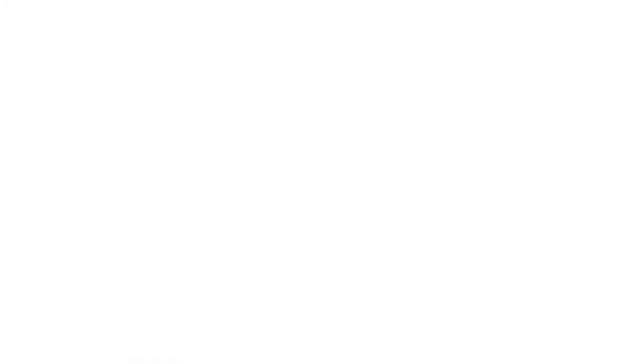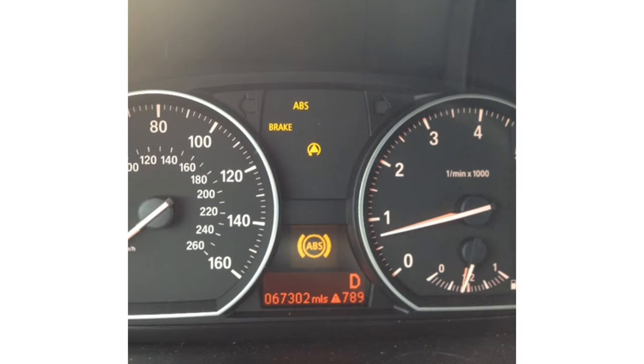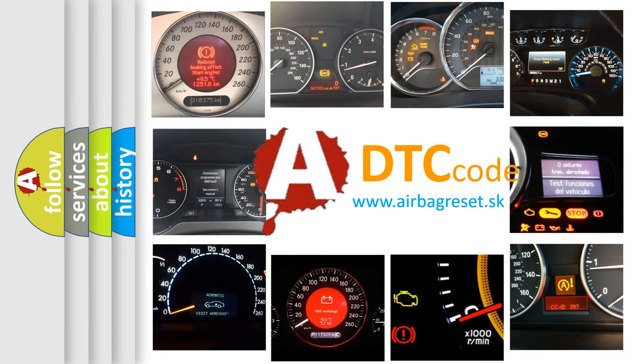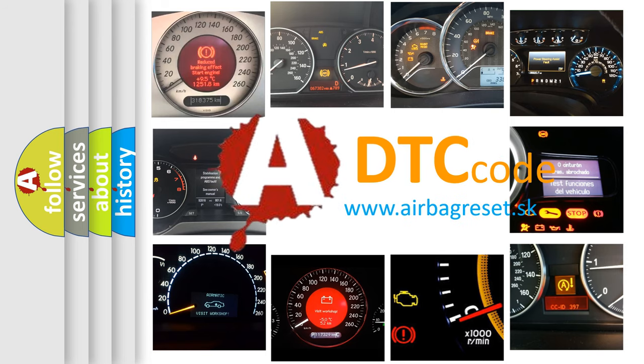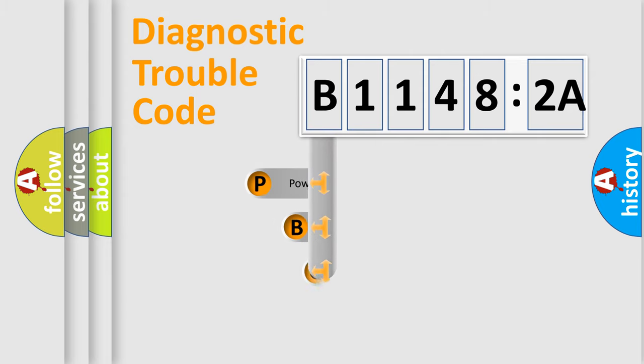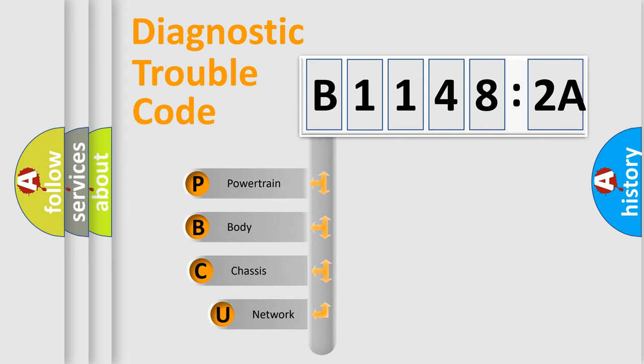First, let's look at the history of diagnostic fault code composition according to the OBD2 protocol, which is unified for all automakers since 2000. We divide the electric system of automobile into four basic units: Powertrain, Body, Chassis, and Network. This distribution is defined in the first character code.